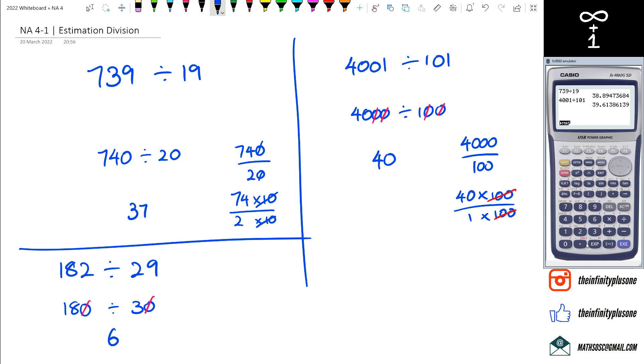So let's have a look on the calculator. What are we going to get? 182 divided by 29, roughly we're getting 6.27, and in our answer we actually got 6. Close enough. That's exactly what estimation is.